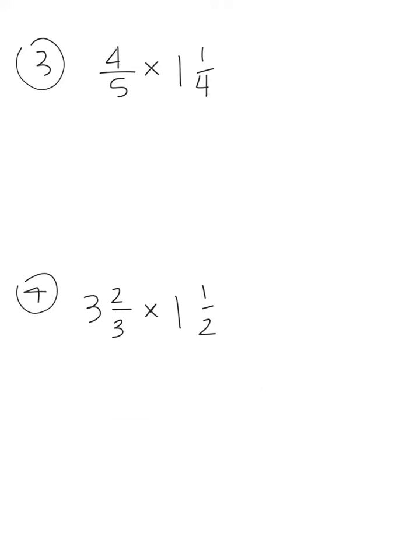Number 3 is 4/5 times 1 and 1/4. Go ahead and pause it. 4/5 times 5/4. Now a couple things you could do. You could go straight across and you would get 20 over 20 which is 1. Some people also noticed I could simplify those 4s and I would get 5 over 5 which is 1.